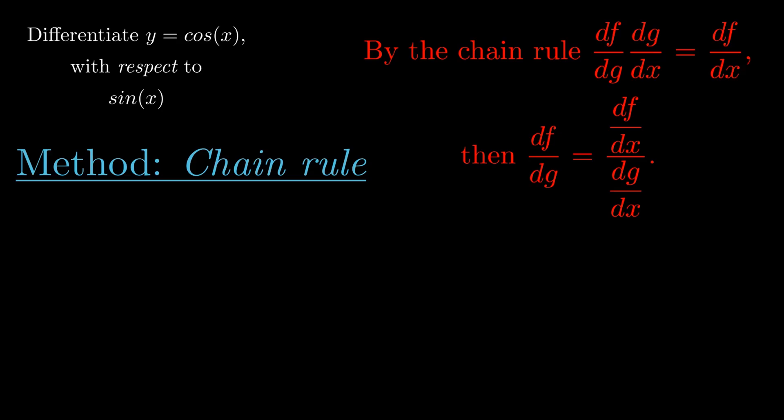The derivative of f with respect to g is equal to the derivative of f with respect to x divided by the derivative of g with respect to x. This is excellent because we know how to take derivatives with respect to x. So all we need to do is identify what f and g are and plug them into our formula which we've derived using the chain rule.